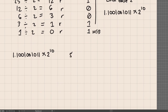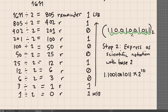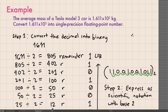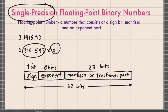Step 3: determine the sign bit. Since the initial number is positive, the sign bit is 0.